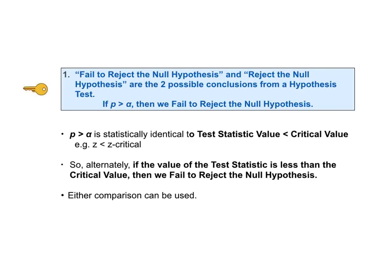The following is described in detail in the video "Reject the Null Hypothesis," but here's a brief description. If p is greater than alpha, then the value of the test statistic — say z — must be less than the critical value z-critical. The two comparisons are statistically identical because the p-value is derived from the test statistic value; they both contain the same information. Likewise, the critical value is derived from alpha, so they both contain the same information. Either comparison can be used.